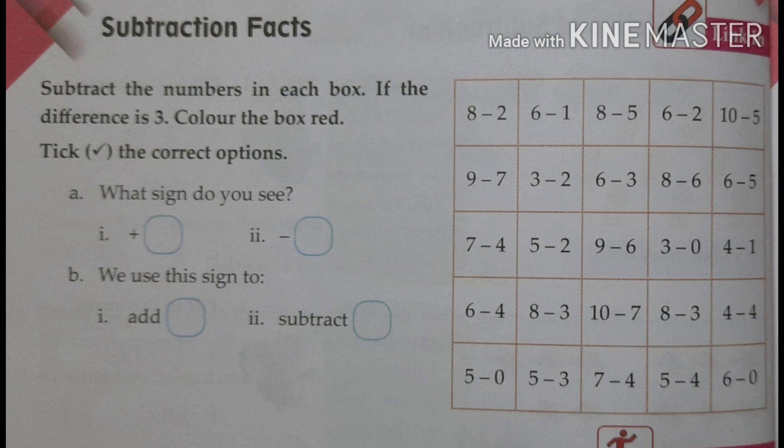Subtract the numbers in each box. If the difference is 3, color the box red. Difference means, you know very well, the answer. After subtraction, you get the answer. That is called difference.